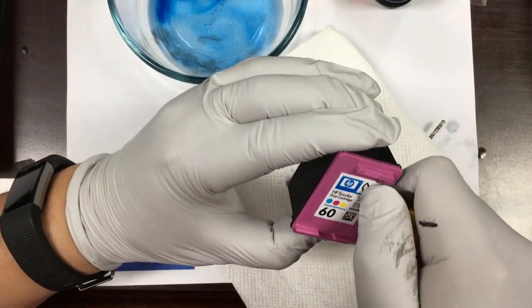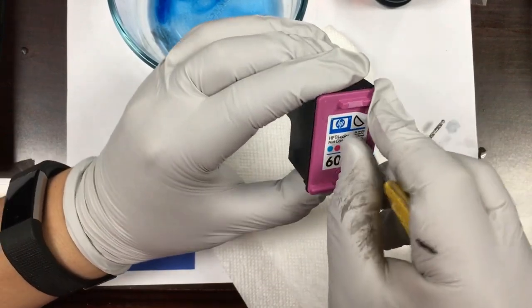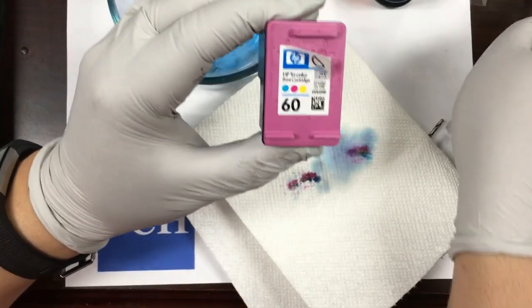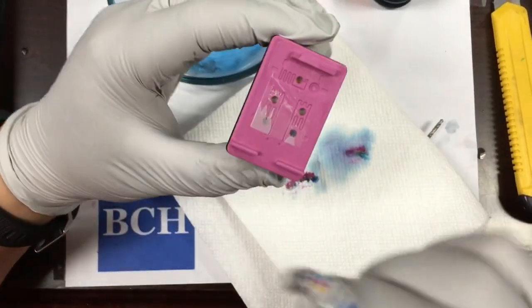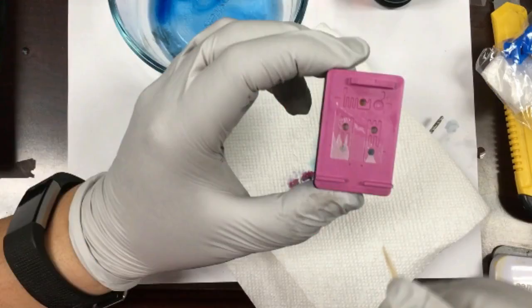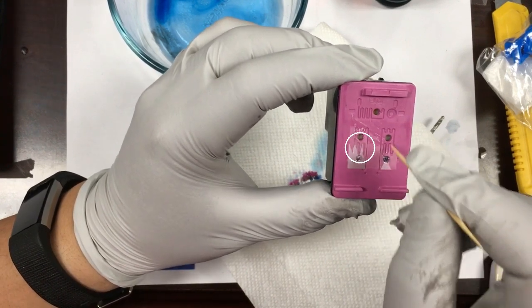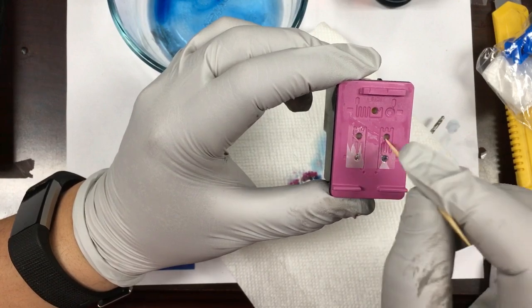Now we work on the color one. I'm going to take the label off, just to show you, but you can just do it over the label. You don't need to peel it off. There are five holes. The top one is one color. The left two holes are one color. The right two holes are one color.